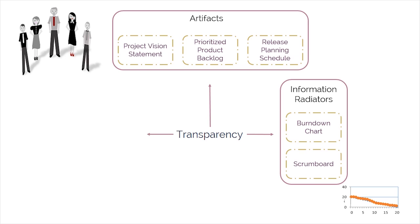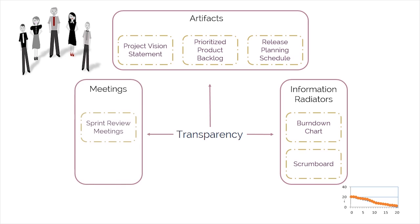Information Radiators, such as the Scrum Board and Burndown Charts, make a team's progress clearly visible to all. Daily stand-up meetings are conducted during the Conduct Daily Stand-Up Process, in which all team members report what they've done the previous day, what they plan to do today, and any problems preventing them from completing their tasks in the current sprint.